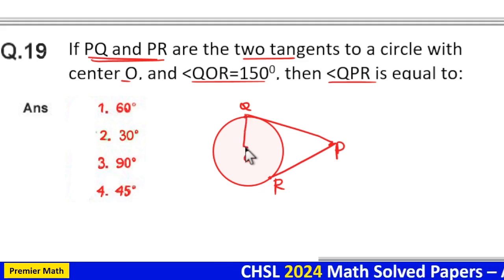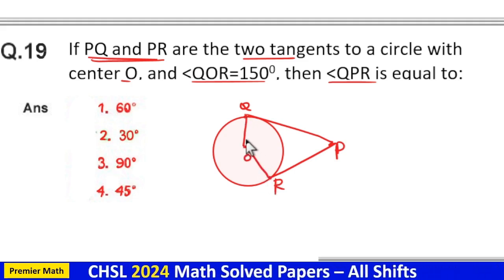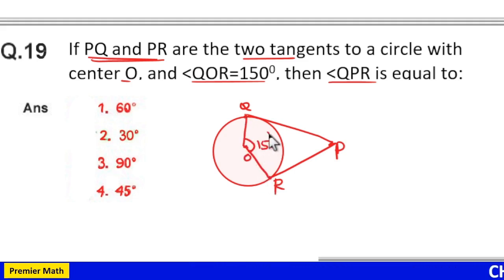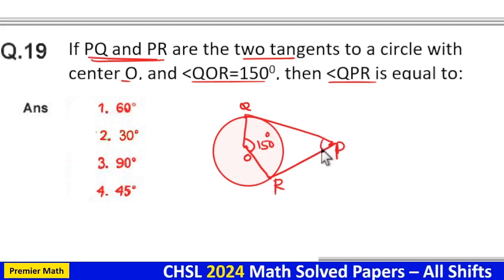Now angle QOR makes 150 degrees. Then we have to find out angle QPR, that is this angle.